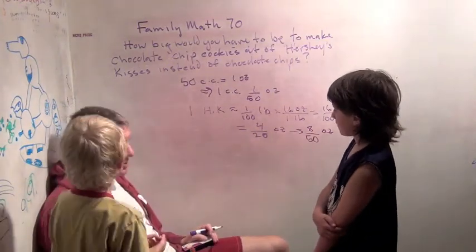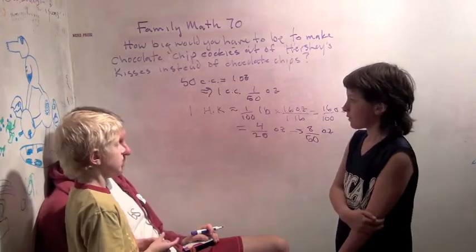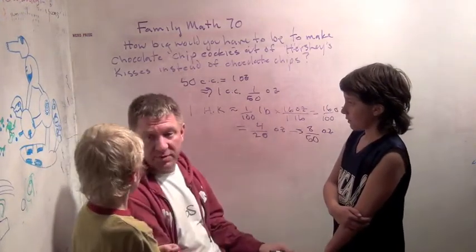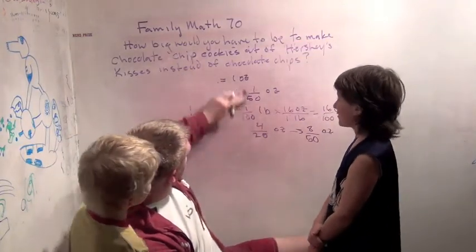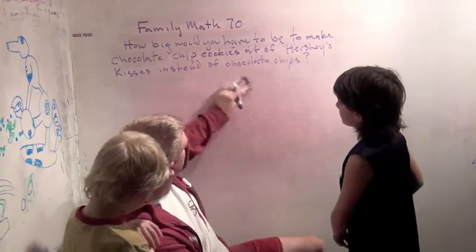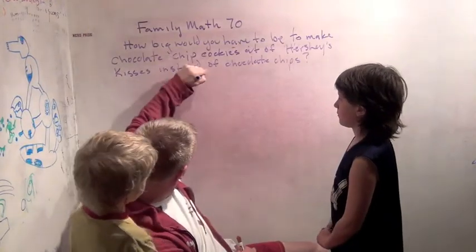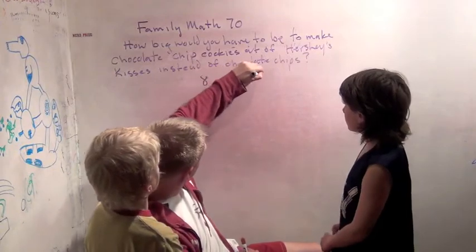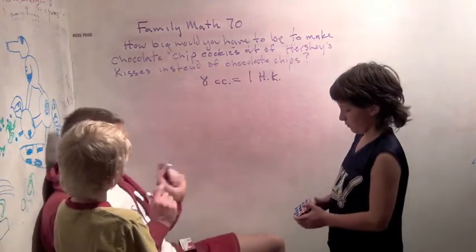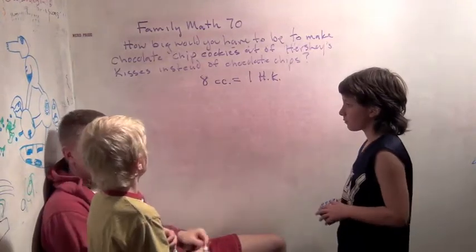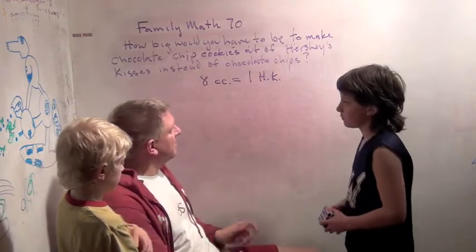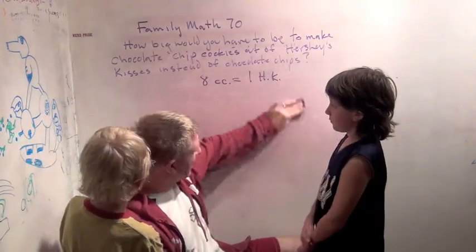Eight chocolate chips to make a Hershey's Kiss. So that's our conversion. Eight chocolate chips is one Hershey's Kiss, according to what we found on the internet. Obviously that's going to depend on the size of your chocolate chips. But let's say it's eight chocolate chips. So our magic formula is eight chocolate chips equals one Hershey's Kiss. So you have to be eight times as big if you're going to do this. But it's interesting to see, what does it mean to be eight times as big?